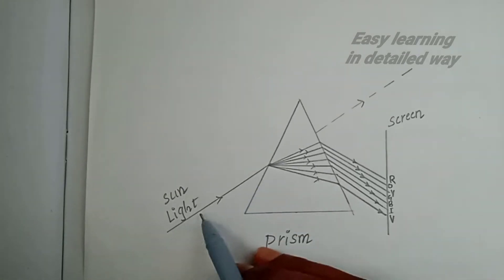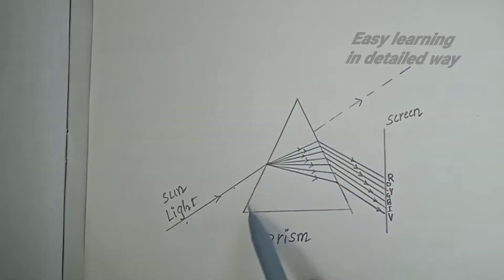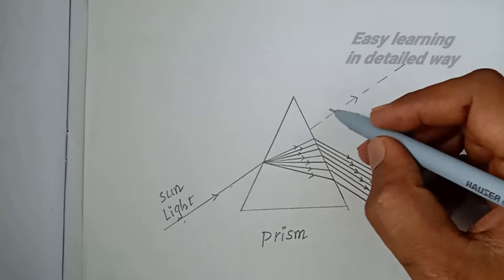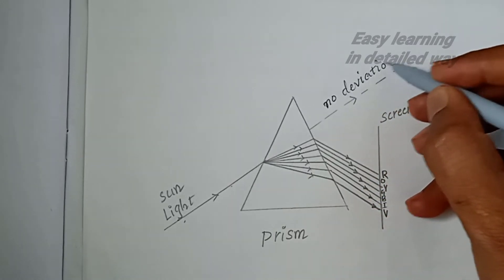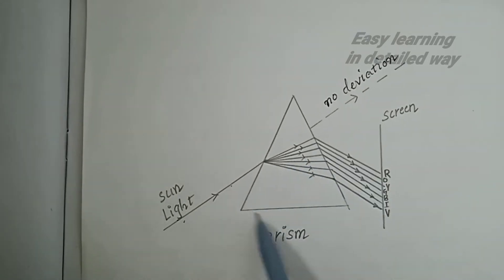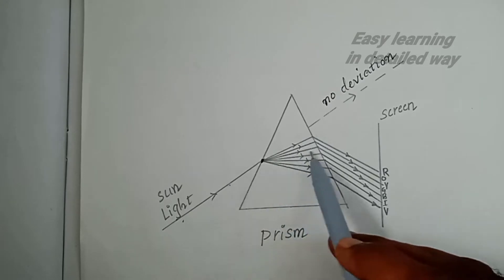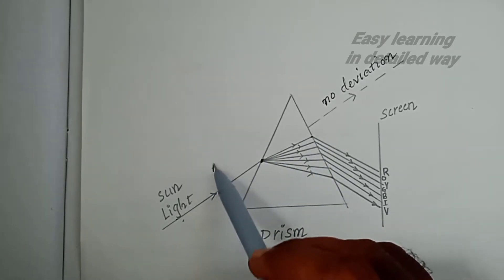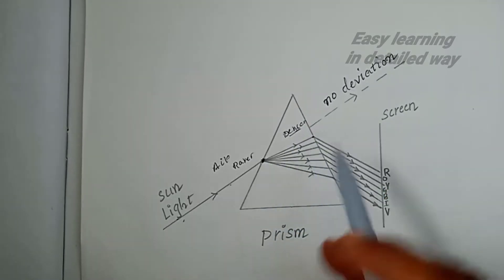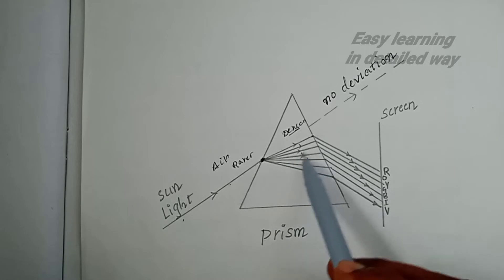What is dispersion? We can see: you pass a beam of sunlight through a prism. The path of the sunlight enters the prism - without deviation it would pass straight, but refraction occurs. When the sunlight goes from a rarer medium to a denser medium, refraction happens, and white light splits into 7 colors.